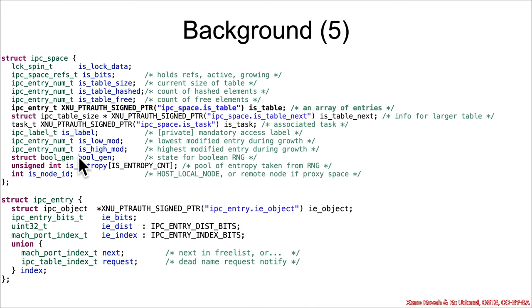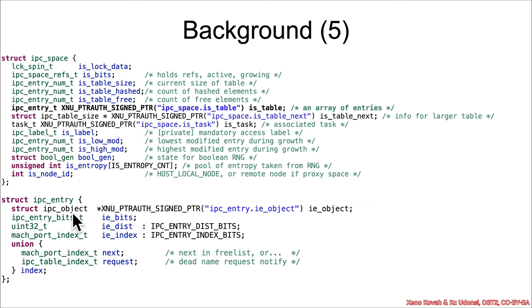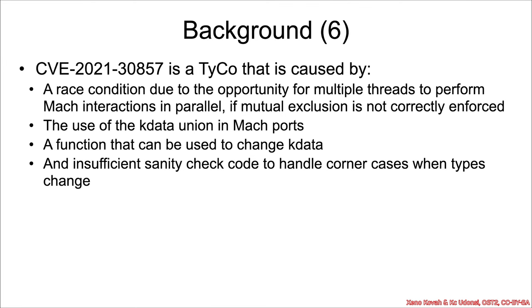The ipc_space data structure has an is_table field, which is a pointer to an array of entries. These entries relate to rights: the first entry is a pointer to an ipc_object, which corresponds to the ipc_object found as the first element of a port. So essentially one entry points to one port and describes what privileges it has.